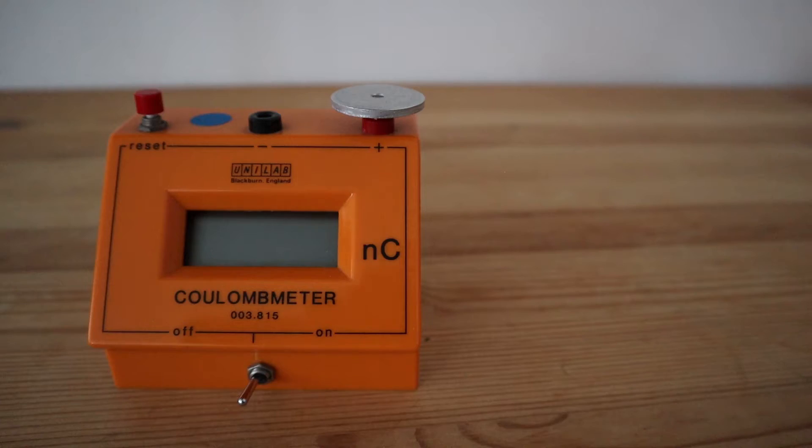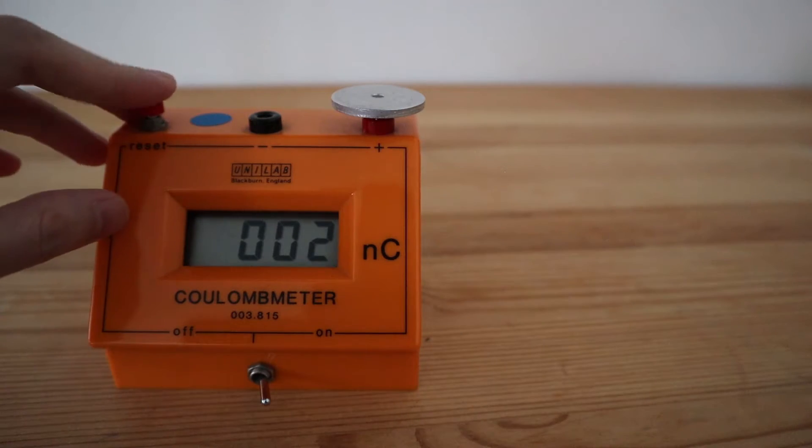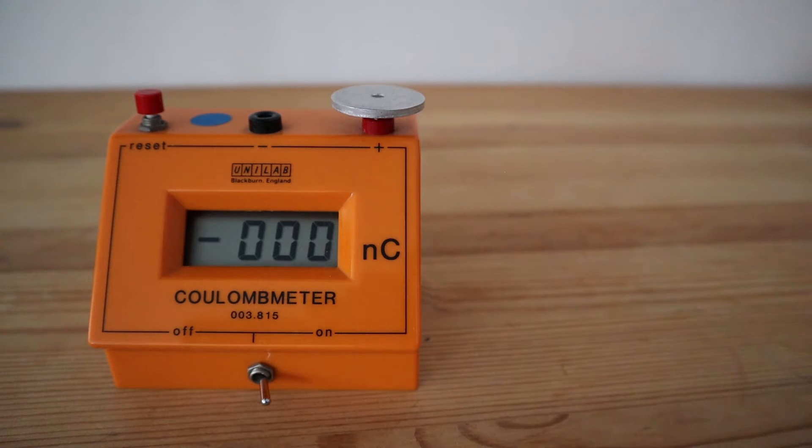Let's see how much of this negative charge of the electrons I can transfer onto the Coulomb meter by scraping the balloon along this metal plate.